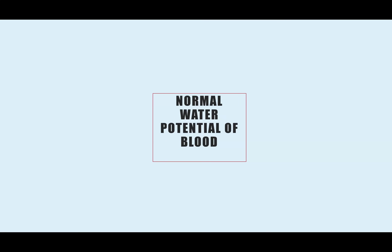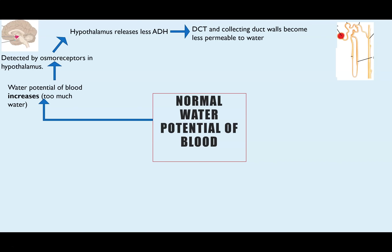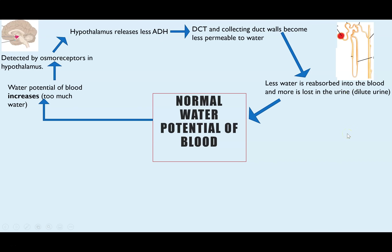To summarise scenario one: starting from a normal water potential, if water potential increases — perhaps from not sweating much, drinking a lot, or having little salt in the diet — water moves into the osmoreceptors by osmosis and the hypothalamus releases less ADH. The distal convoluted tubule and collecting duct walls become less permeable, so less water is reabsorbed into the blood, more remains in the nephron and is lost as dilute urine, returning the blood to normal water potential.